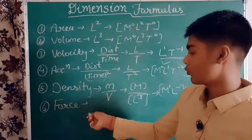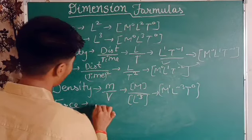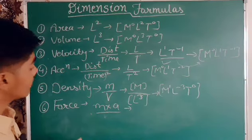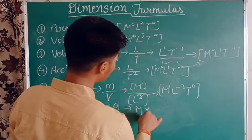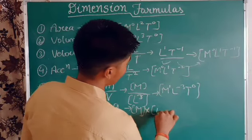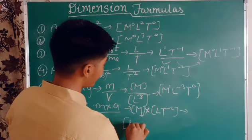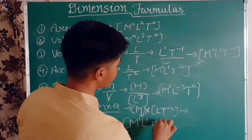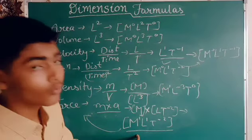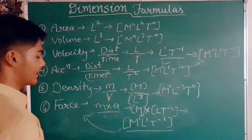The sixth and most important formula is force. Force equals mass times acceleration. Mass is M, and the dimensional formula for acceleration is L¹T⁻². Multiplying them together, we get [M¹L¹T⁻²] as the dimensional formula for force. We must remember this: M¹L¹T⁻².